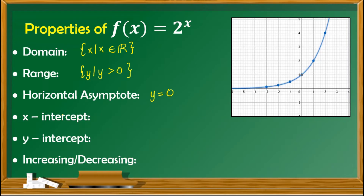To confirm using the concept of x-intercept, we find the value of x when y is 0. Doing this, we have 0 equals 2 raised to the power of x. In order to solve for x, we need to make the bases equal. But since there is no way for the bases to be the same, the x-intercept is none.